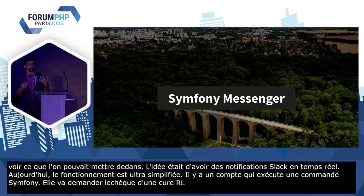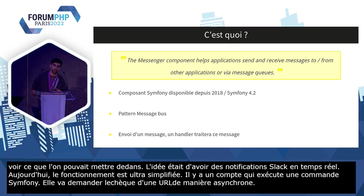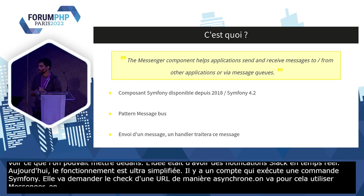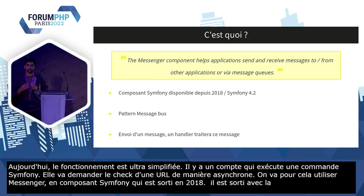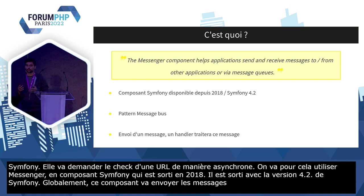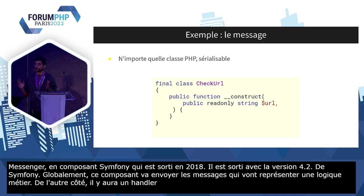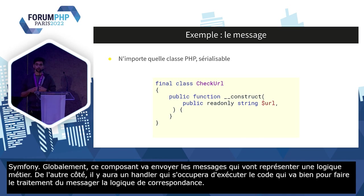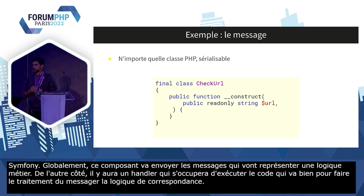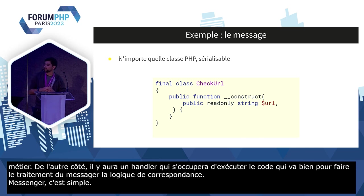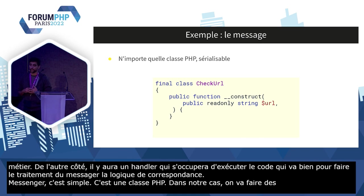Pour ça, on va utiliser premièrement Messenger. Messenger, c'est un composant Symfony sorti en 2018 avec la version 4.2. Ce composant va permettre d'envoyer des messages d'un côté — un message représente une logique métier — et de l'autre côté, un handler va s'occuper d'exécuter le code correspondant. Un message dans Messenger, c'est juste une classe PHP sérialisable. Dans notre cas, on va faire un message CheckUrl avec une propriété URL, l'URL à monitorer.